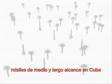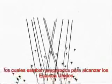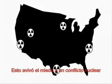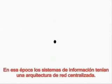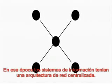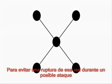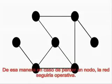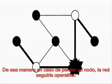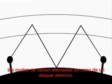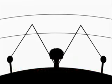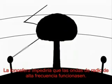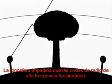In 1962, American ferret aircraft discovered middle- and long-range missiles in Cuba, which were able to reach the United States. This stoked fear of an atomic conflict. At that time, information systems had a centralized network architecture. To avoid a breakdown during an attack, a decentralized network architecture had to be developed, which, in case of loss of a node, would still be operative. Communication still used to work through radio waves, which would have caused problems in case of an atomic attack. The ionosphere would be affected, and the long-wave radio waves wouldn't work anymore.